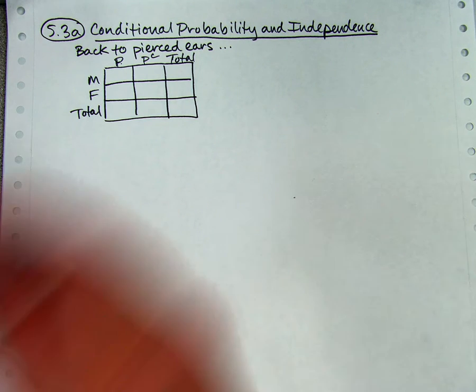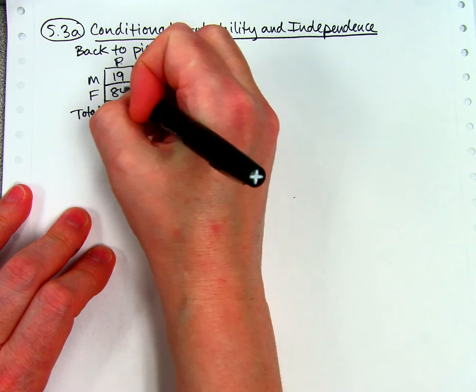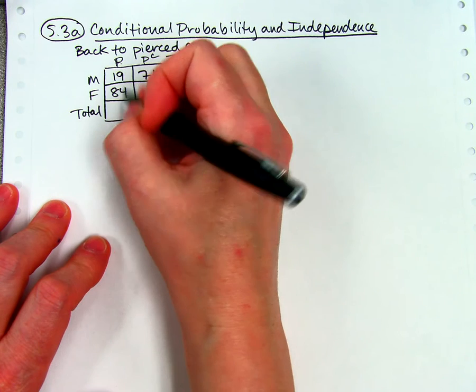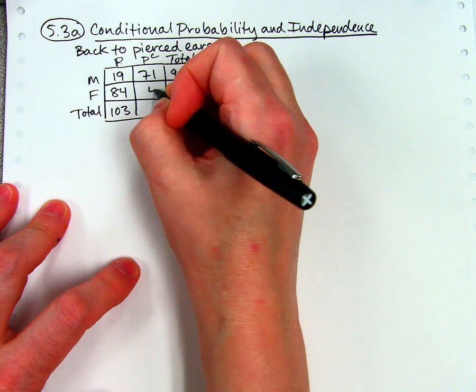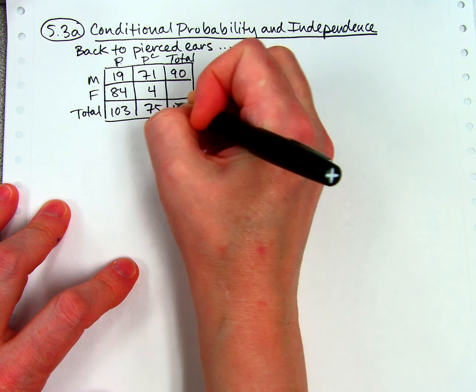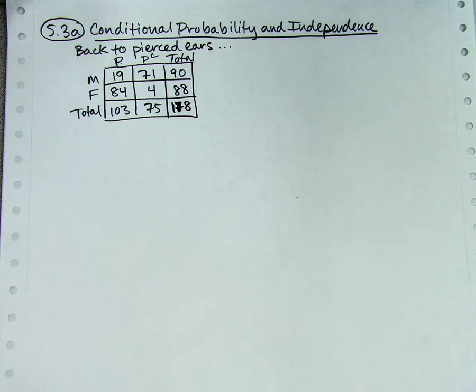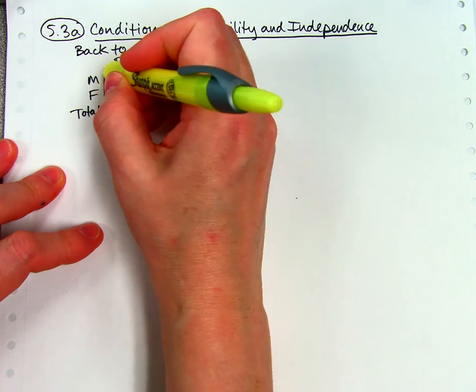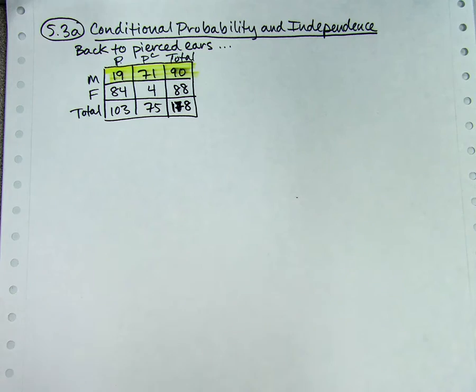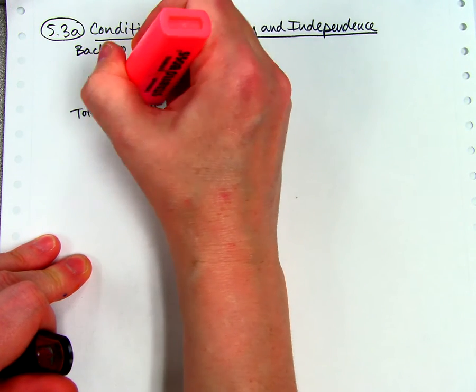What we had before were the numbers given: 19 and 71 and 84. And then we calculated some others, like we added them together to get 90. We added these and got 103. There were four women without Pierce-Deers, 75 and 178 and 88. Those numbers should look familiar. And the highlighting again because I like it. I've got this whole row as yellow, Pierce-Deers as pink, and the overlapping area was the 19.